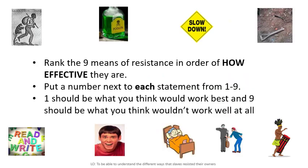Now that you've completed your grid listing the nine ways slaves could resist, rank them in order of how effective you think they would be. Put a number from one to nine next to each — number one being what you think works best, number nine being least effective. Really think about this: consider the consequences and outcome of each. Don't just pick one casually — think carefully about what would actually happen.